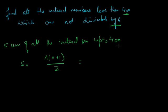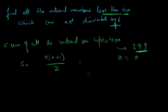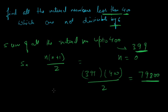This is the sum of all natural numbers less than 400, or equivalently less than or equal to 399. Now let's calculate the sum of all natural numbers less than 400 that are divisible by 6. These are 6, 12, 18, and so on. The largest number less than 400 divisible by 6 is 396.